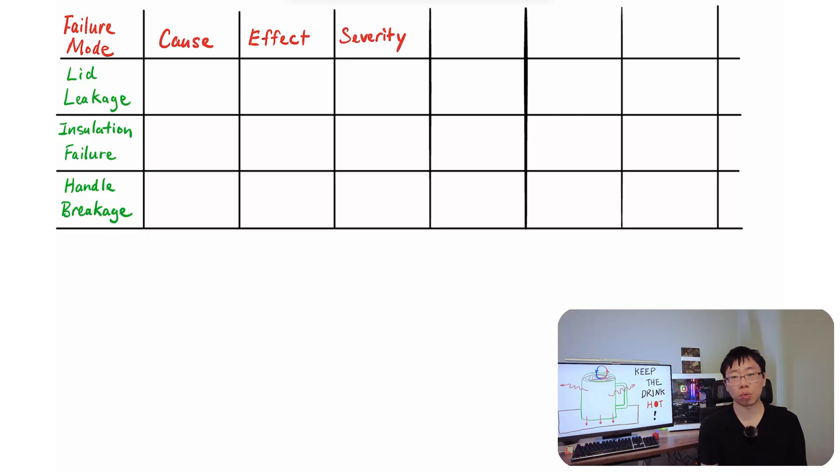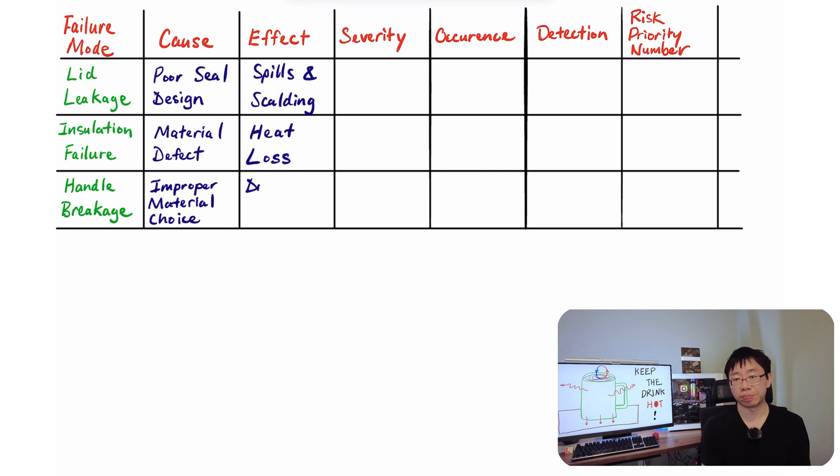So for each failure mode, we start out by listing what actually causes the failure mode and the effects of it. For example, the lid leaking is a failure mode and the cause of it is a poor seal design. The effect of this failure mode is spillage and burning the user. We assign scores on a scale 1 to 10 for severity, occurrence, and detection, and then calculate a Risk Priority Number, or RPN, by multiplying these three numbers together for each failure mode.